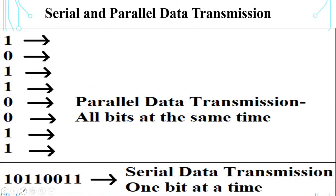Devices such as CRT terminals, cassette tapes, etc., and data communication over long distances require serial communication. In serial communication, a binary word is transmitted one bit at a time over a single line by converting a parallel word into a stream of serial bits. In parallel communication, for example with 8-bit data like 10110011, all 8 bits are transmitted at the same time. That type is called parallel data transmission, requiring 8 lines for transmitting data.